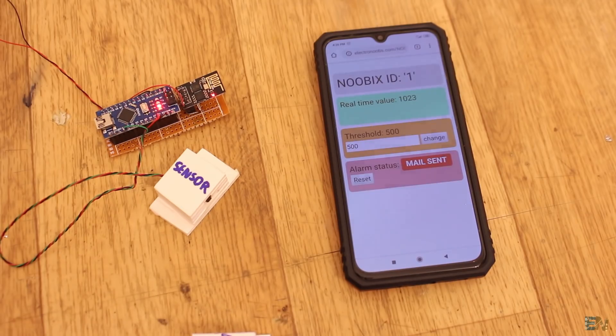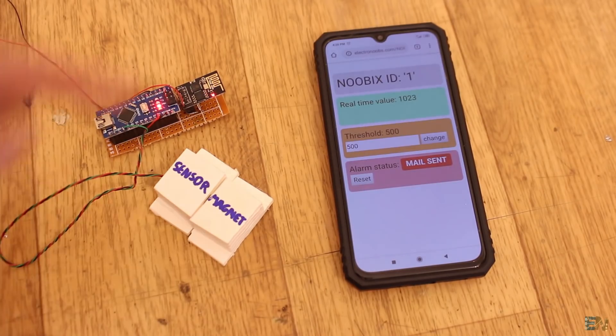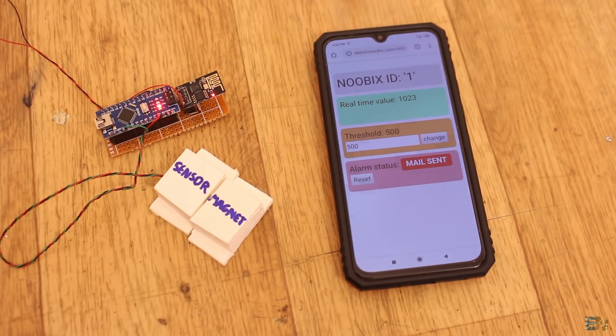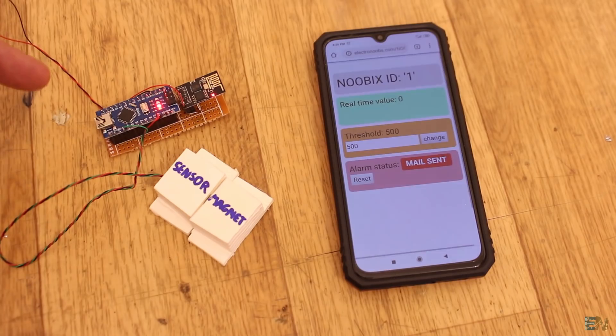And now it will send a mail. Yes, a mail was sent to my Gmail. And if I put back the magnet, the value will change very fast from 1023 to zero back again. There you have it. So in this way it's a lot faster, but you can't use this with batteries because without the deep sleep mode, it will drain your battery very, very fast.